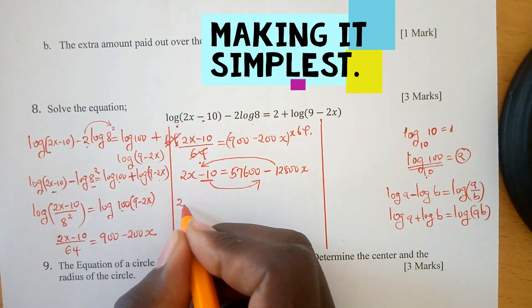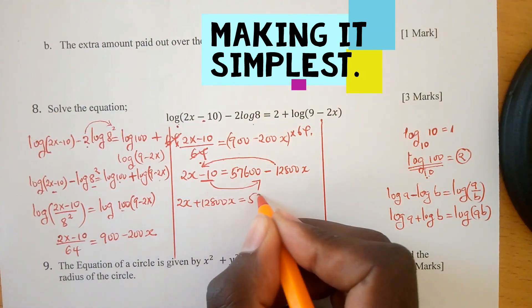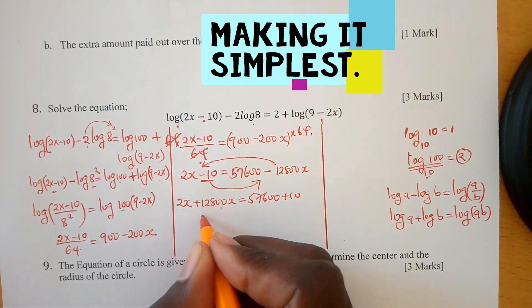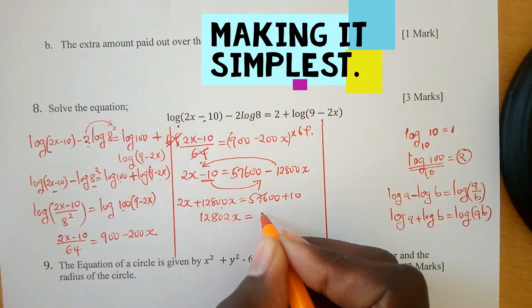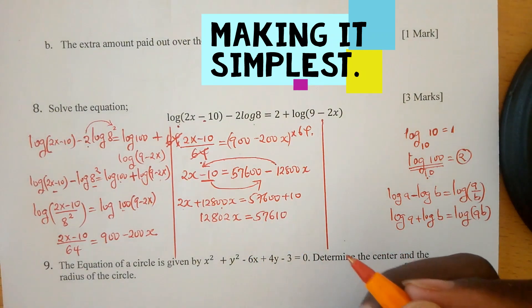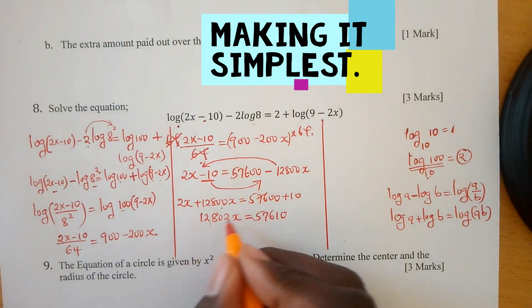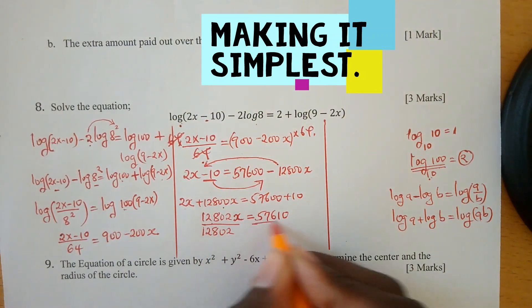12,802x equals 57,610. Then divide both sides by 12,802 so we remain with x.